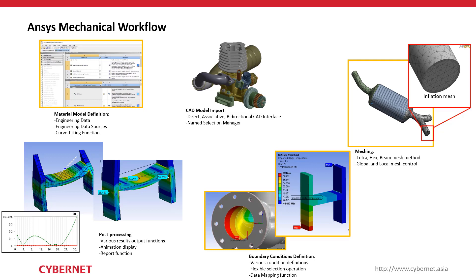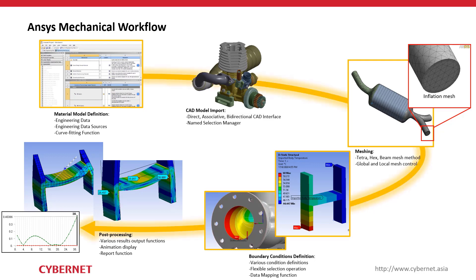The ANSYS Mechanical workflow is straightforward — follow from top to bottom. First is material definition: define all materials or use the ANSYS material library. Next, import your CAD geometry — it can be in SolidWorks, CATIA, AutoCAD format, and so on. Then perform meshing — ANSYS has extensive meshing capabilities with controllability over mesh size and shape.